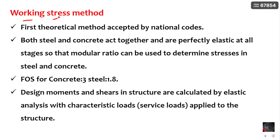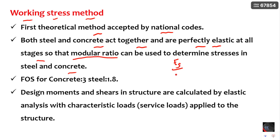Coming to the working stress method in detail: this is the first theoretical method accepted by national codes. It is assumed that both steel and concrete act together and are perfectly elastic at all stages, so that the modular ratio can be used to determine stresses in steel and concrete. The modular ratio is defined as Young's modulus of steel divided by Young's modulus of concrete, that is ES by EC.